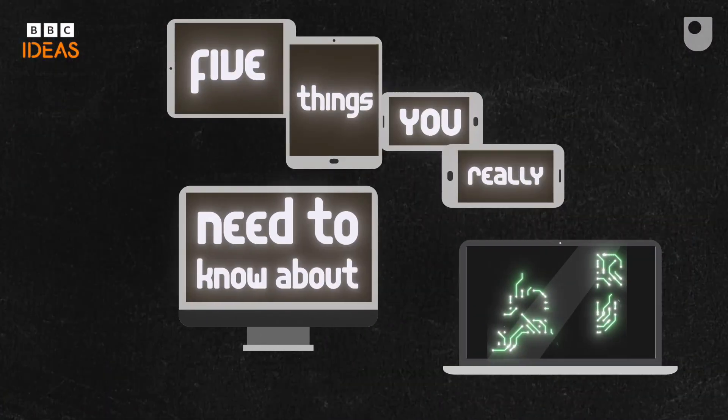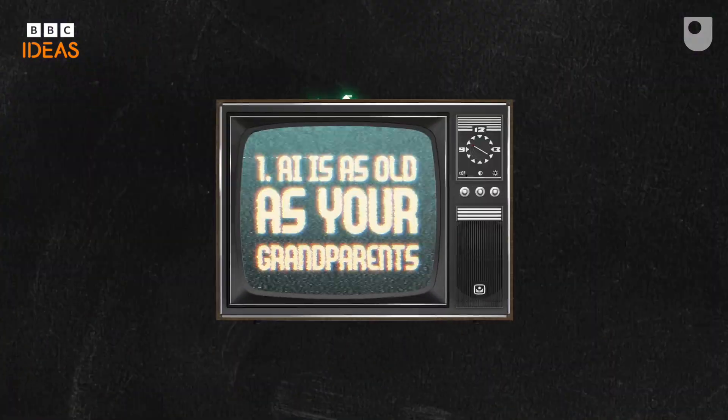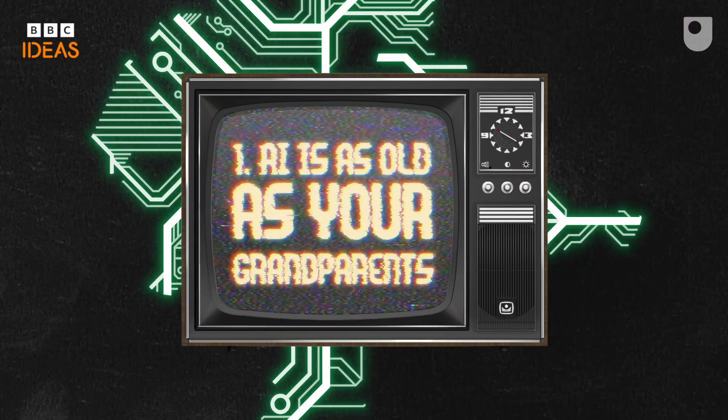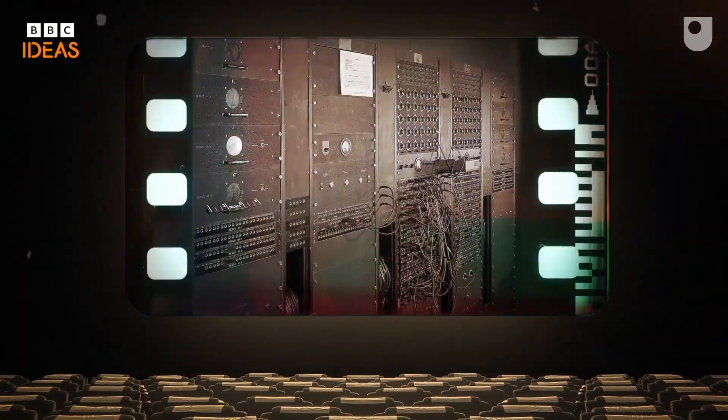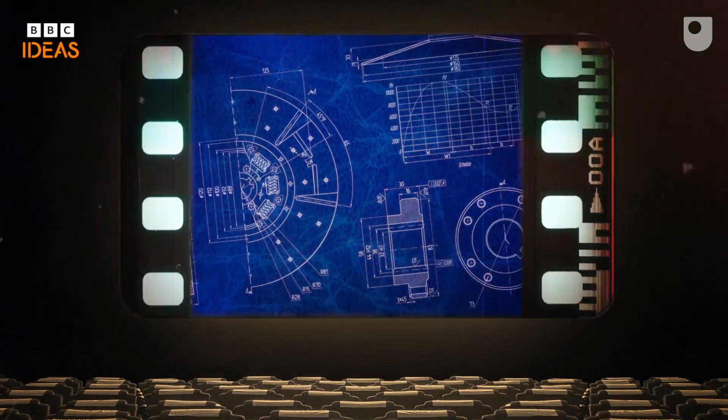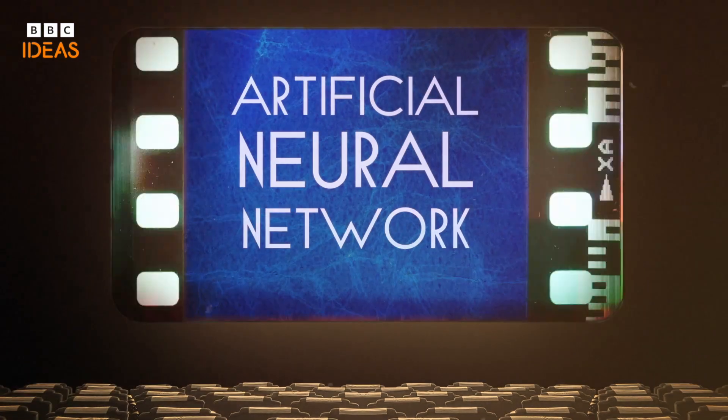Five things you really need to know about AI. AI is as old as your grandparents. The first thing to know is that AI has been around a lot longer than you might think. Its roots lie in an idea known as an artificial neural network from the 1940s.